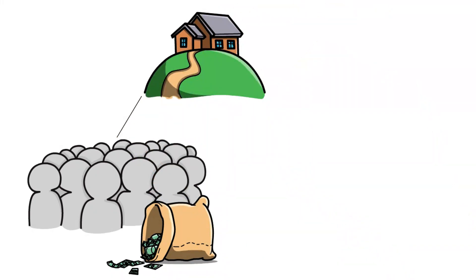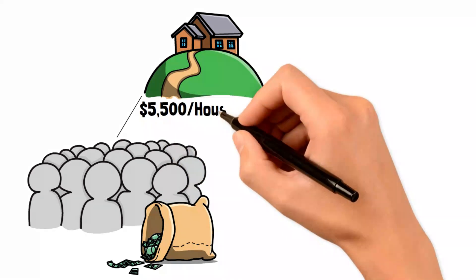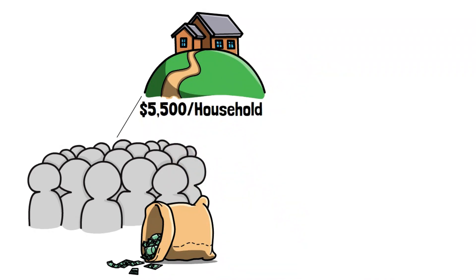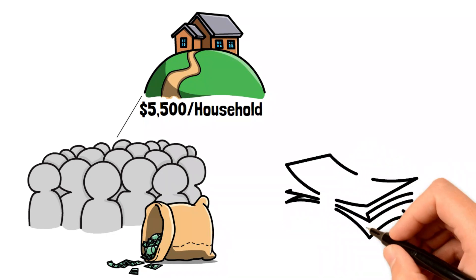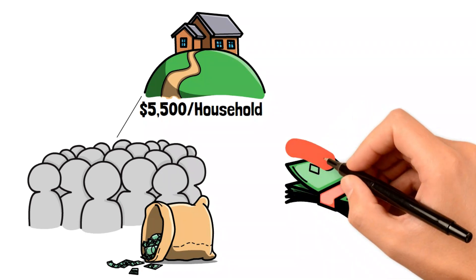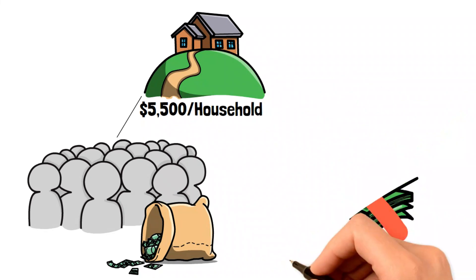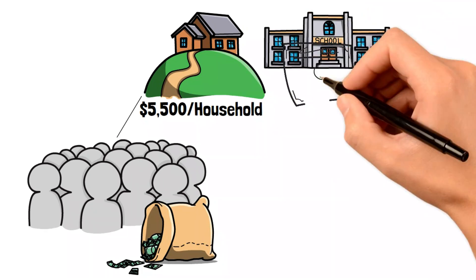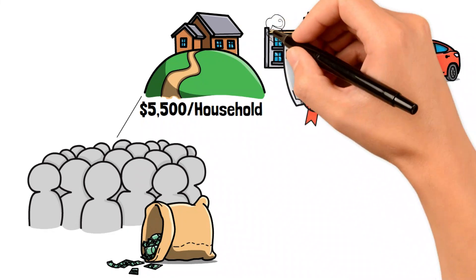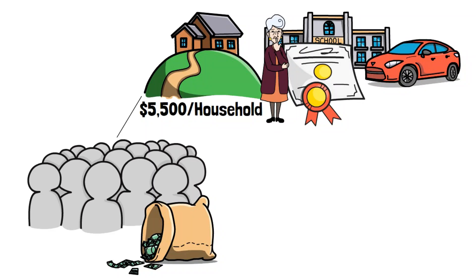On average, this equates to approximately $5,500 per household. It's important to understand that this doesn't necessarily translate to readily available cash, as these funds might have to be used to pay off student loans, mortgages, cars, or directed towards retirement funds.